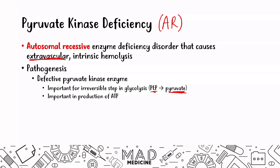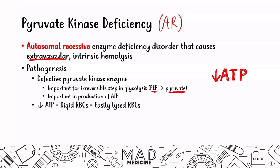When you do not have proper functioning pyruvate kinase, or you have a deficiency in pyruvate kinase, you are not going to be able to produce adequate amounts of ATP. A decrease in ATP is very important. When it comes to red blood cells, what happens with a decrease in ATP is that the red blood cell is going to become very rigid, and that rigidity will allow the red blood cell to be lysed easily.